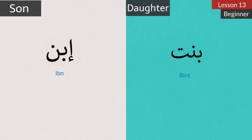Ibn — Son. Bint — Daughter. Let's repeat. Ibn — Son, and Bint — Daughter.